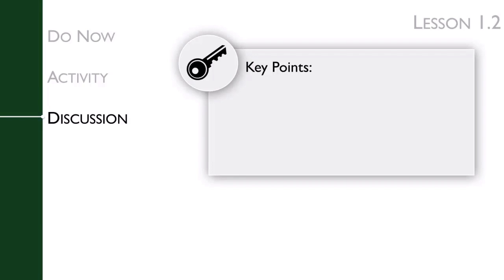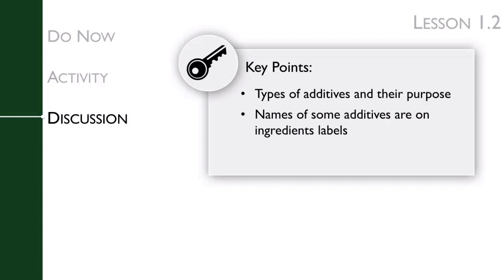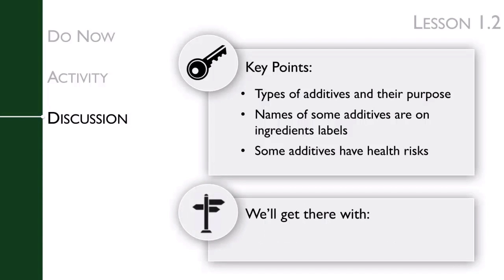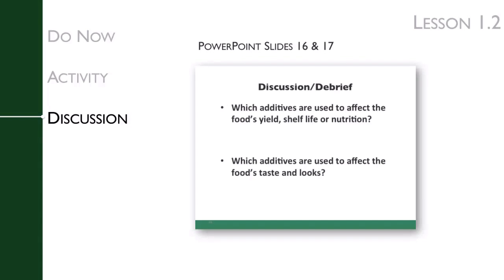The key points of this lesson's discussion are that there are many types of additives with different purposes. We can find the names of some additives on ingredient labels, and some additives have health risks associated with them. We get there by debriefing the content from the activity. In the discussion, you will present names of some common types of additives. The health risks of these additives is also discussed when it applies.